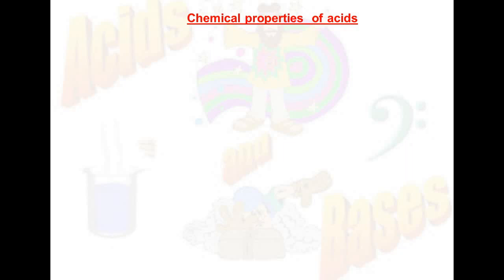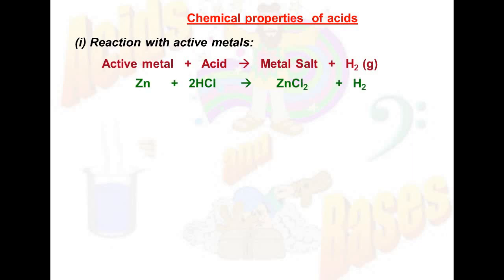Now the chemical properties of acids. First, reaction with active metals. These equations are very important to learn so that we can write the chemical equations for the respective chemical reactions. Whenever active metals react with acids, especially dilute acids, they form metal salt plus hydrogen gas. For example, zinc when reacted with dilute HCl gives zinc chloride plus hydrogen gas. Iron when reacted with sulfuric acid gives iron sulfate plus hydrogen gas.